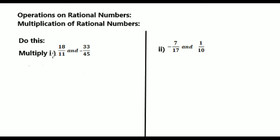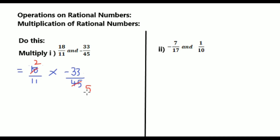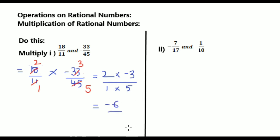See next: multiply 18/11 and -33/45. That equals to 18/11 into -33/45. Now we shall do cancellation: 9 table — 2 times 18, 5 times 45; 11 table — 11 once 11, 11 threes are 33. Now we shall multiply the numerators 2 into -3 by multiply denominators 1 into 5. That equals to 2 into -3 = -6 by 1 into 5 = 5. So the answer is -6/5.